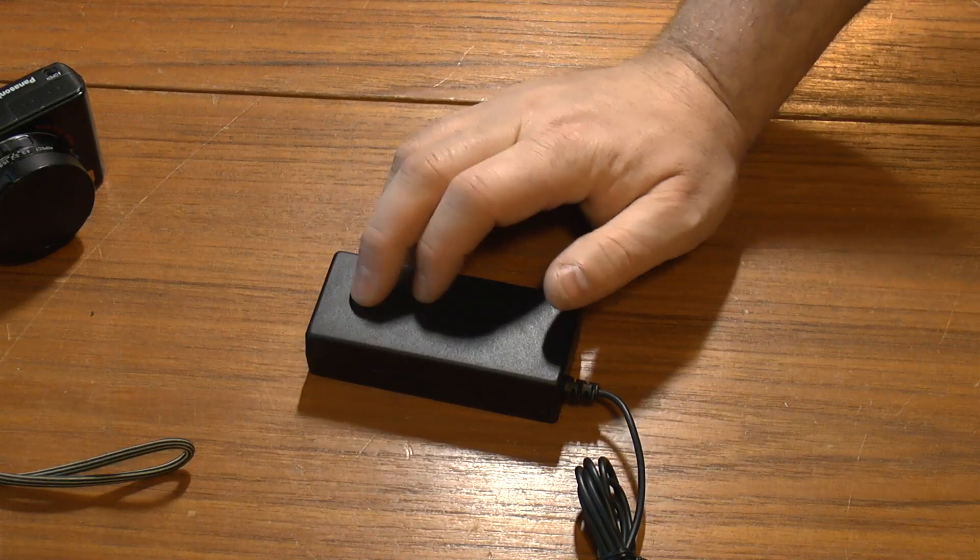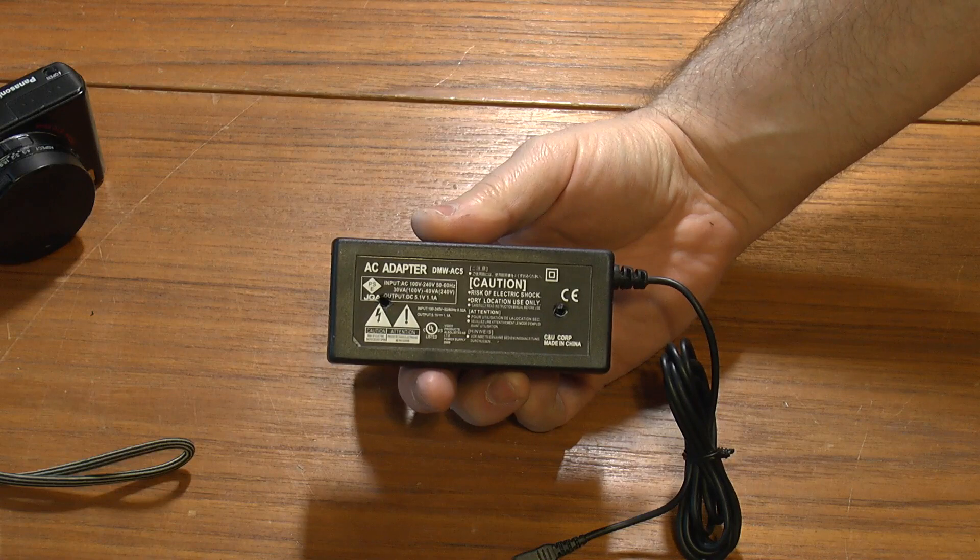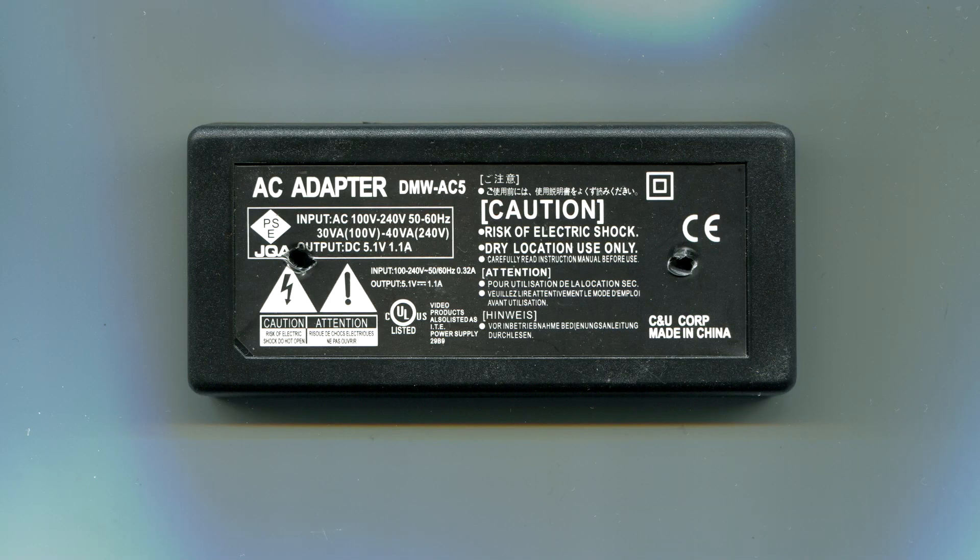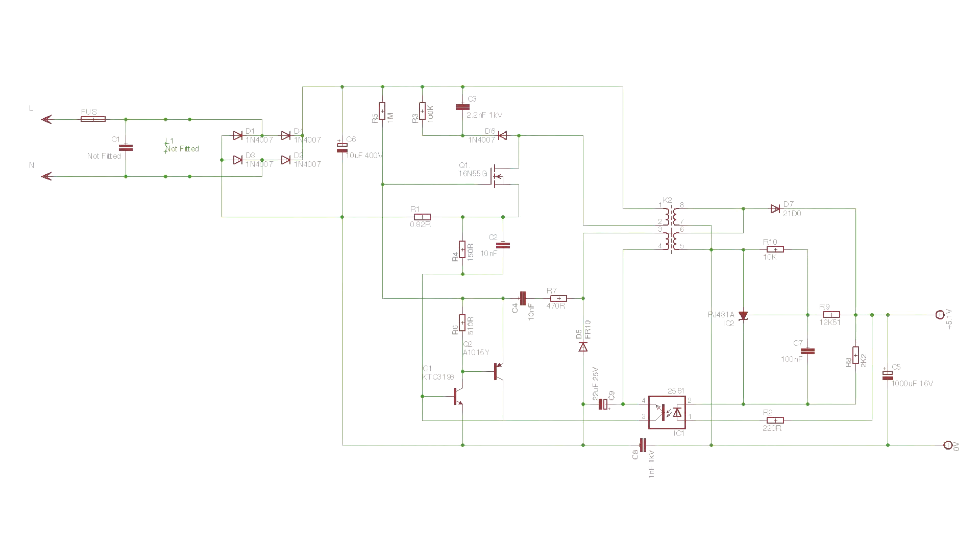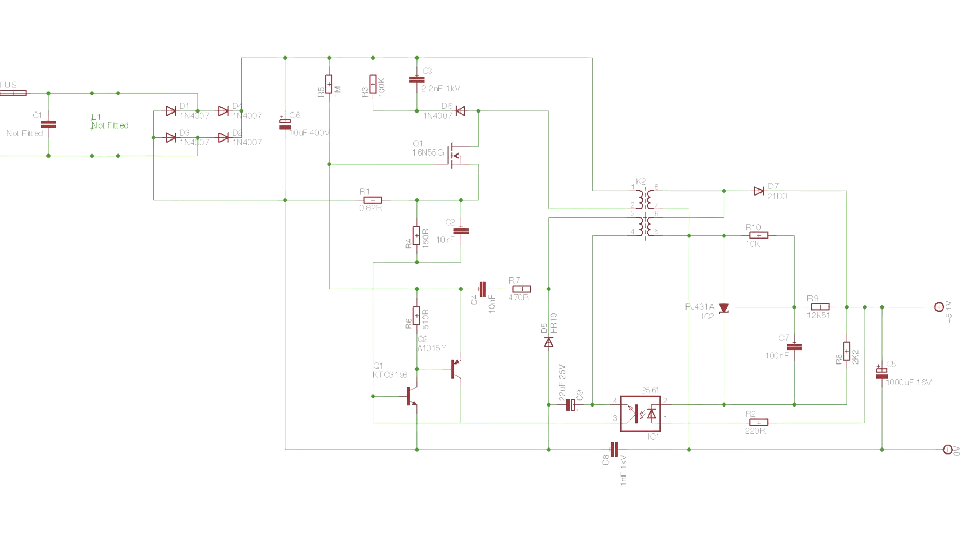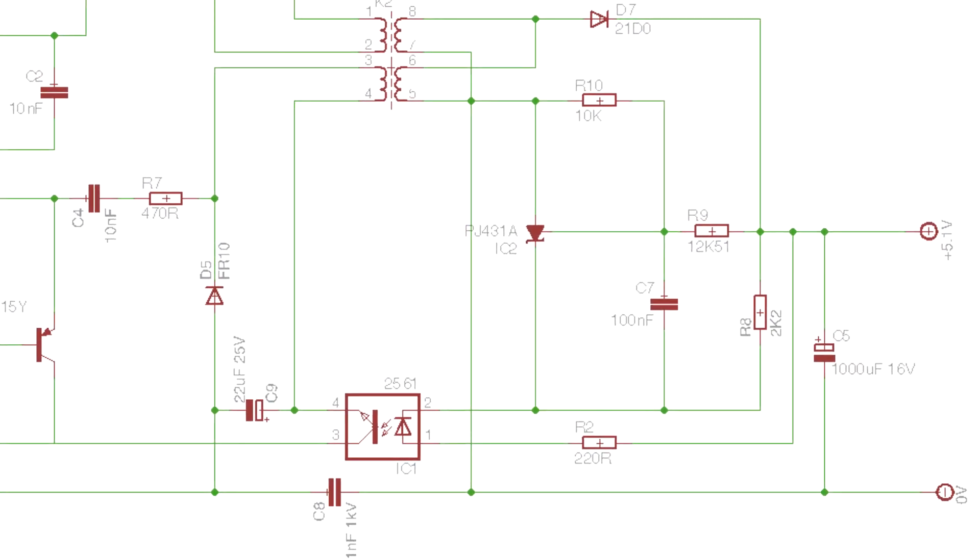So this arrived. This is the model. I'm not going to do a load test on this because as you can see from the schematic I expect it to work fairly well. I expect the output to be pretty close to 5.1 volts because IC2 is a PJ431A which is a precision voltage reference. So it should be pretty much programmed to output exactly 5.1 volts. So I expect it to work to that extent but I don't particularly want to load test this for another reason and I'll show you that in a second.